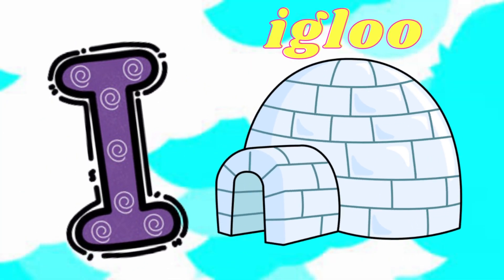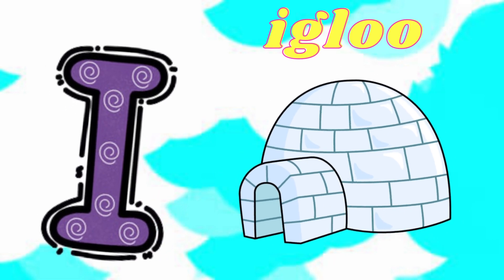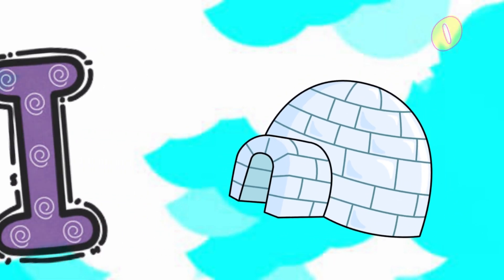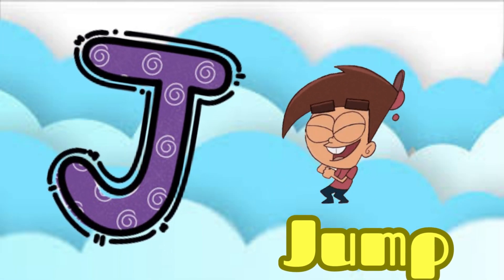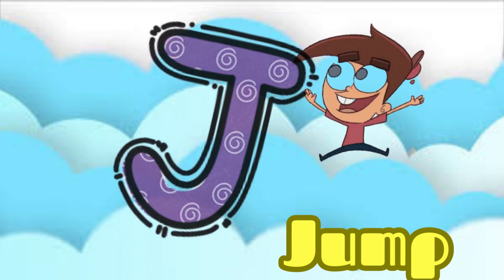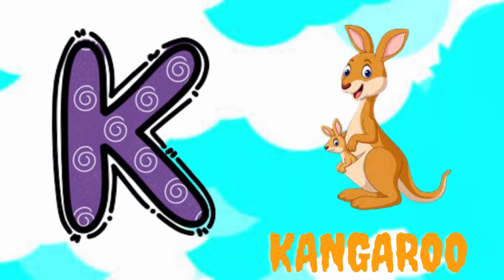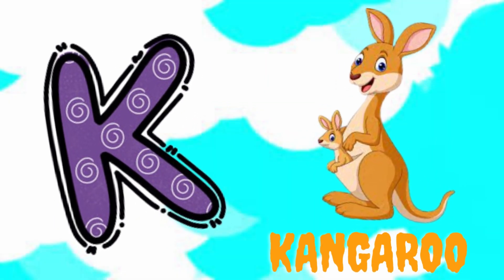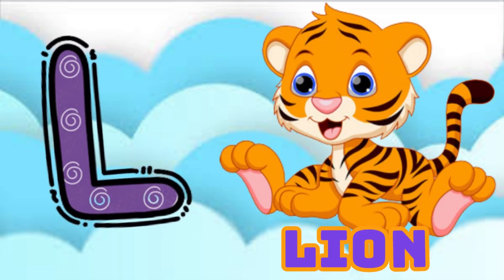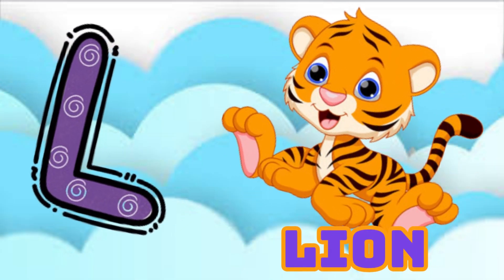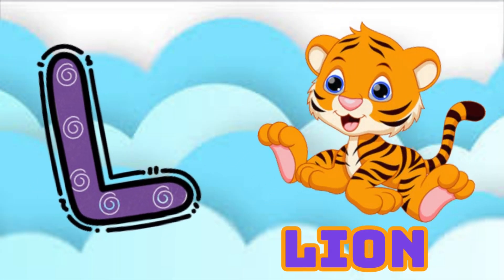I is for Igloo, I-I-Igloo. J is for Jump, J-J-Jump. K is for Kangaroo, K-Kangaroo. L is for Lion, L-Lion.